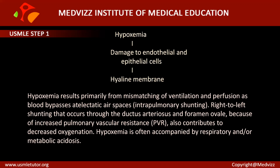One important pathophysiology to know is that hypoxemia results primarily from mismatching of ventilation as well as perfusion. Blood bypasses atelectatic air spaces, which is called intrapulmonary shunting, that is right-to-left shunting.